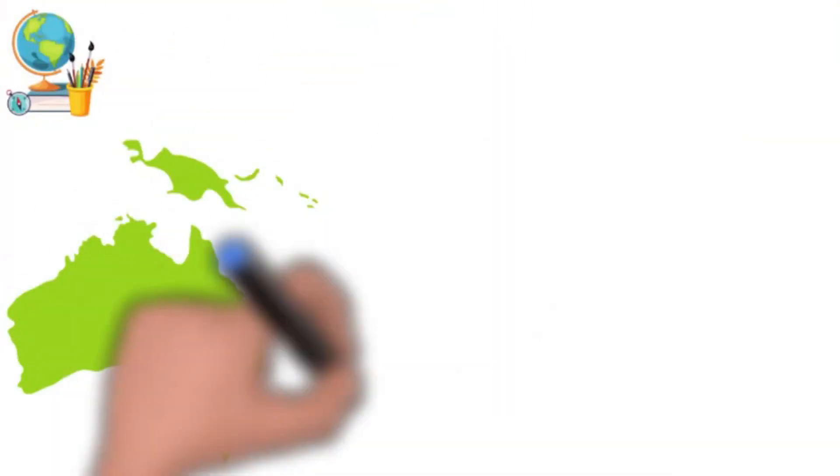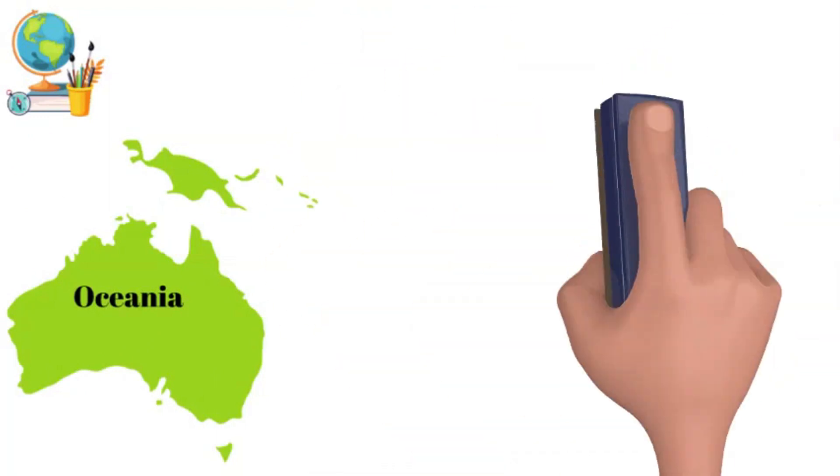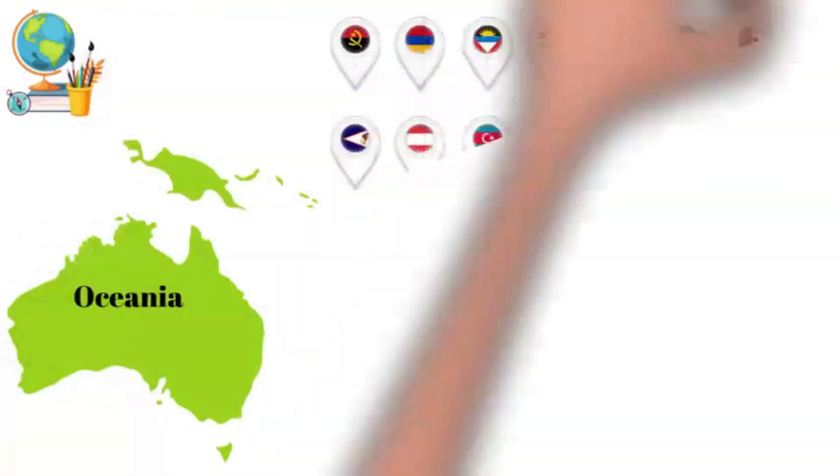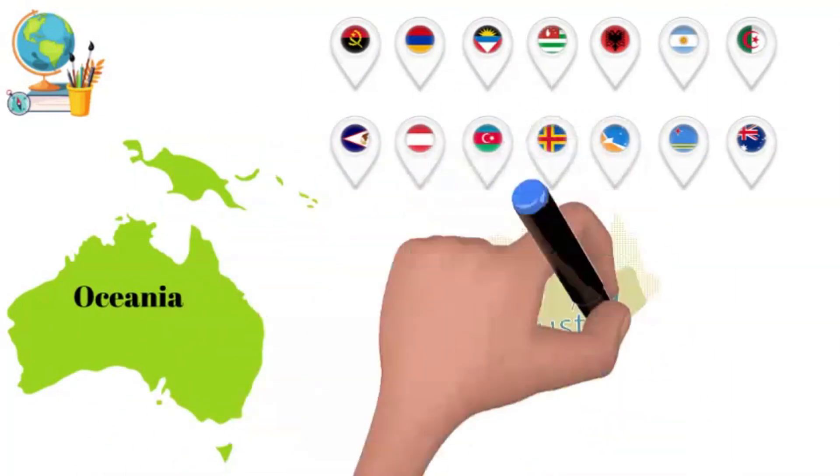Number two: Oceania. Oceania is in a continental group consisting of 14 countries and includes Pacific Islands and Australia. Often Australia is named as a continent.